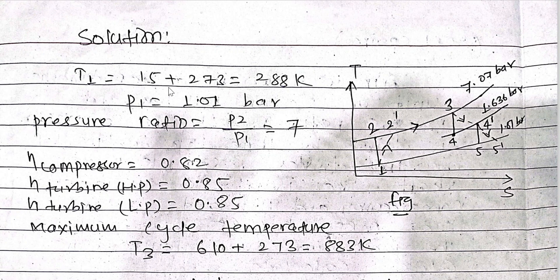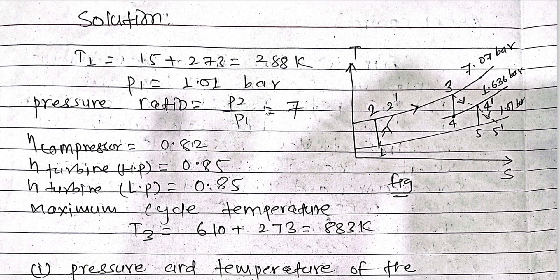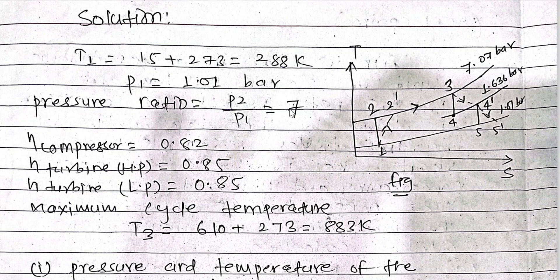Solution: First, convert the given temperatures to absolute values. T1 = 15°C + 273 = 288 K. P1 = 1.01 bar, as given in the question. The pressure ratio P2/P1 = 7:1, so we write P2/P1 = 7. This is also shown on the TS diagram.